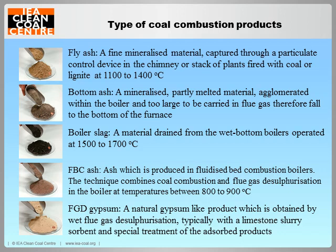The type of coal combustion products or coal combustion waste varies depending on the mineral components of coal, the combustion technique, and emission control technologies. This slide lists some of the main types of coal ash. The first three are formed in pulverised coal-fired power plants. FBC ash is from fluidized bed combustion boilers. FGD gypsum is from the flue gas desulfurisation process. Other FGD residues such as spray dry absorption product and ammonia FGD residues are not listed in this slide.